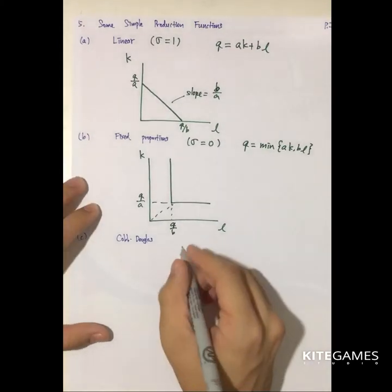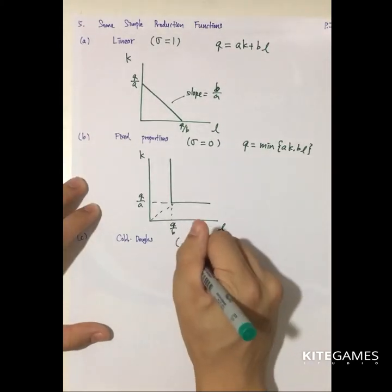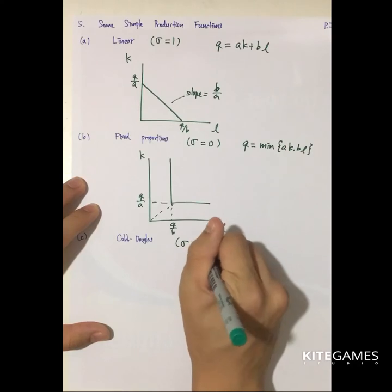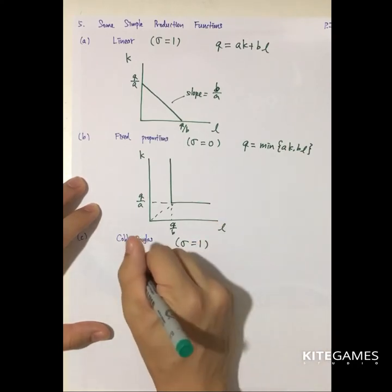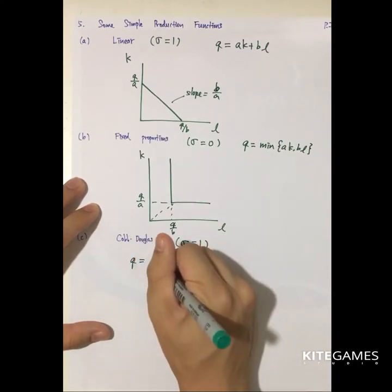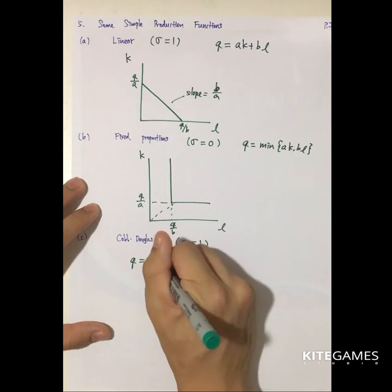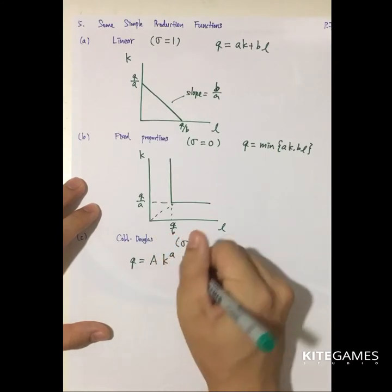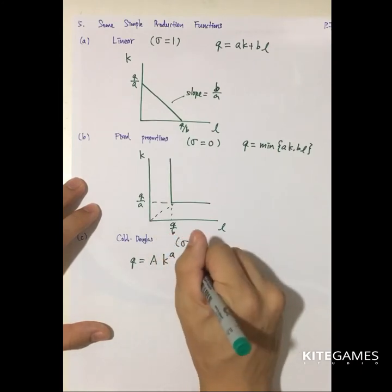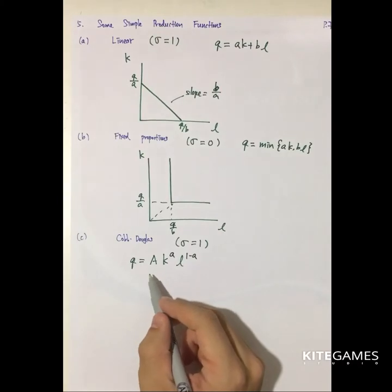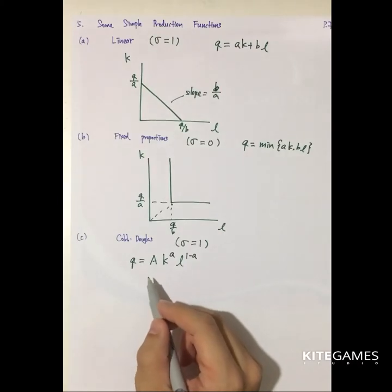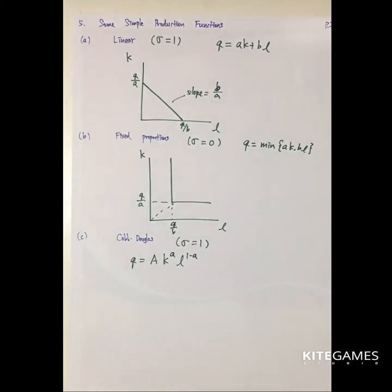The third is Cobb-Douglas. Cobb-Douglas has the elasticity of substitution equal to one, and the form is q = A k^α l^(1-α), where A is the variable capturing technical progress — that is, the technological level.